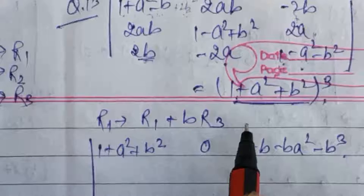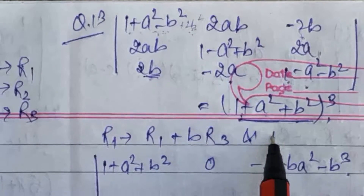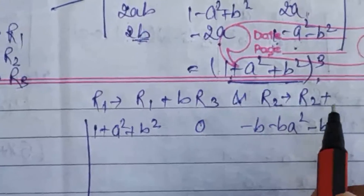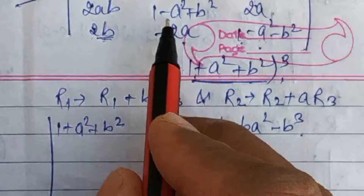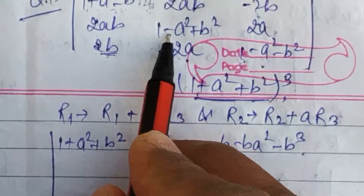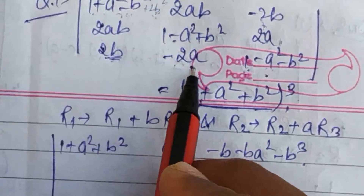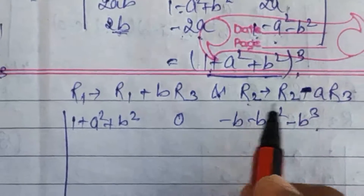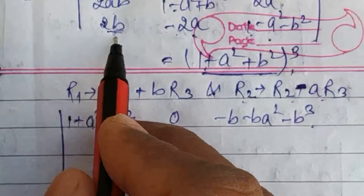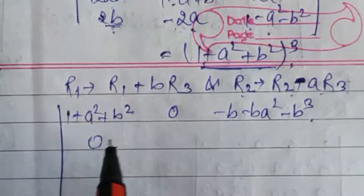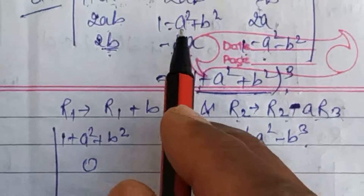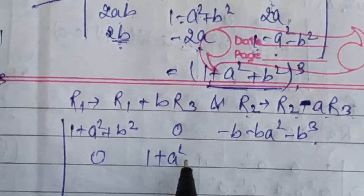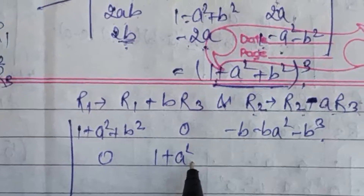Same operation second row पर भी लगाता हूँ: R2 minus a·R3। क्योंकि यहाँ minus a square है और minus 2a है, तो a से multiply करने पर 2a square हो जाएगा और subtract करने पर यहाँ zero आ जाएगा। a की multiply करके subtract करने पर 1 plus a square plus b square आता है।